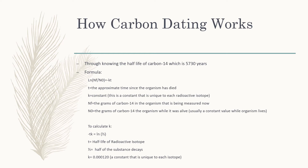NO is the amount of carbon-14 the organism had when it was still alive — basically at the point of death. To calculate K using this formula, you set NF equal to 1 and NO equal to 2, with T equal to 5,730 years, and in that way you can find K, which was found to be 0.00012.